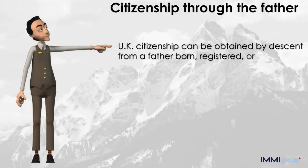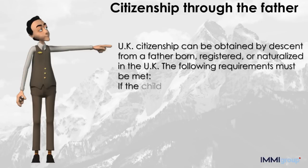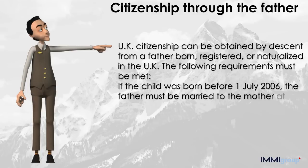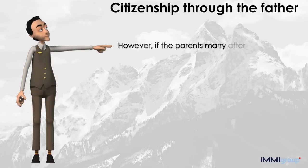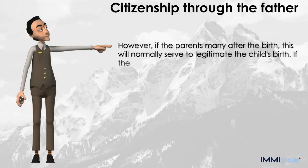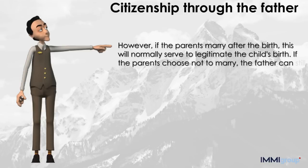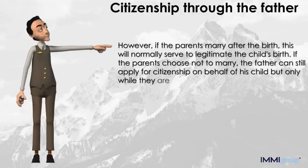UK citizenship can also be obtained by descent from a father born, registered, or naturalized in the UK. If the child was born before July 1st, 2006, the father must be married to the mother at the time of birth. Common law relationships are not recognized for citizenship purposes. However, if the parents marry after the birth, this will normally serve to legitimize the child's birth.